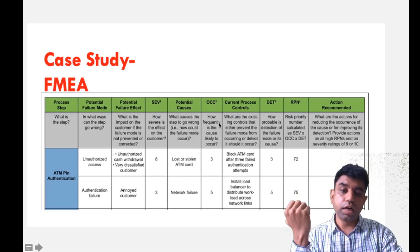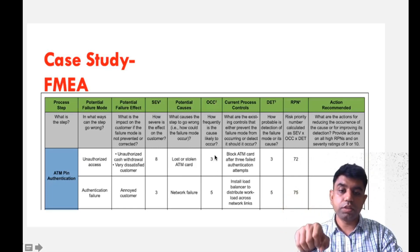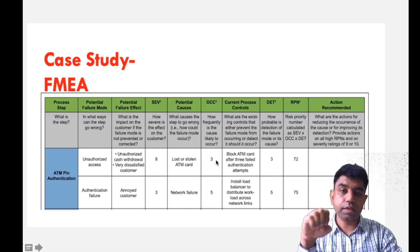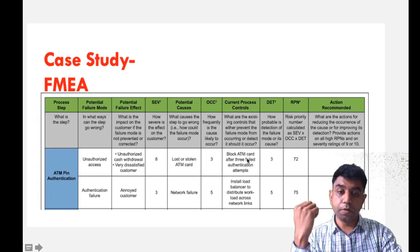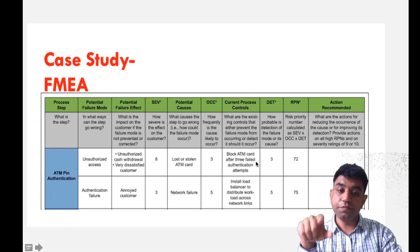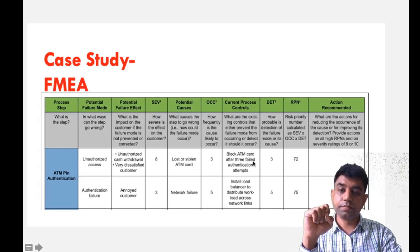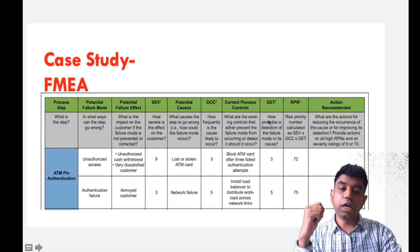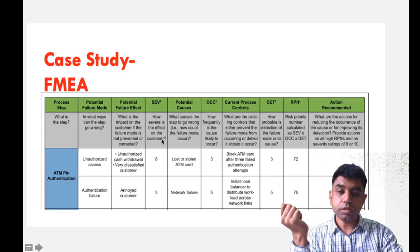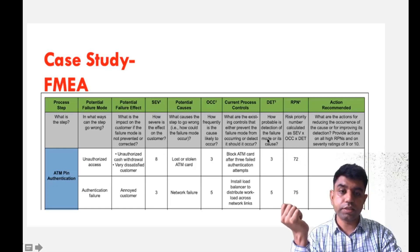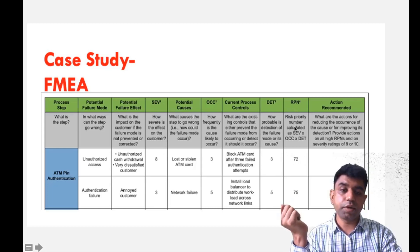We write about that cause. The occurrence rate, based on past experience, is ranking 3. For current process controls, corrective action is required. The company can block the ATM card after 3 failed authentication attempts so that failure won't happen. Detection is given a rank of 3. Multiplying severity, occurrence, and detection gives us the risk priority number.